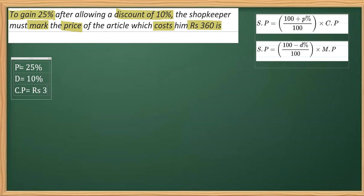So CP is 360. What we have to find out is the mark price, so we'll write down M.P. is equal to question mark. Now once we have written this information symbolically, now we can access the formula.